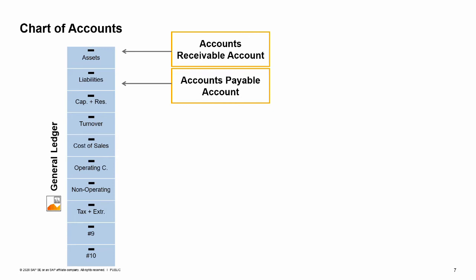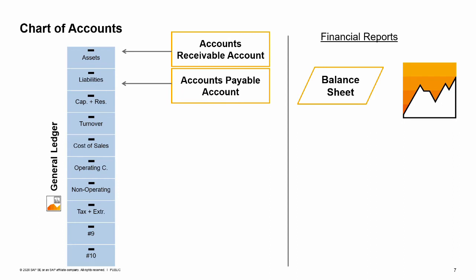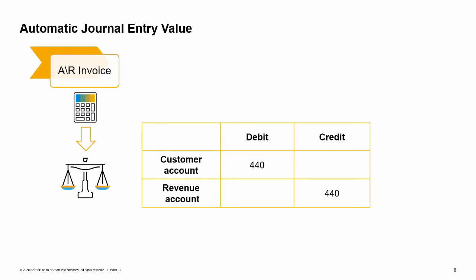The receivable and payable control accounts accumulate the customer's and vendor's transactions in their balances. Therefore, the chart of accounts presents the complete financial status of the company. The financial reports also show the full picture. For example, the balance sheet contains the accounts receivable and accounts payable accounts. We have learned how the system knows which accounts to use in automatic journal entries — this is done using the values defined in the GL account determination window. But how does the system know the value to be credited and debited in those automatic journal entries, for example, in an automatic journal entry created by an AR invoice?